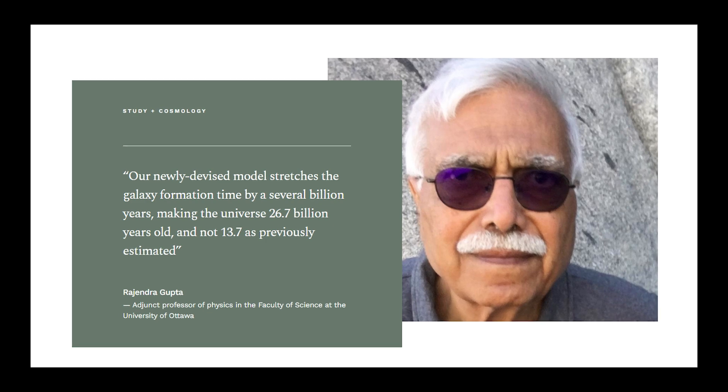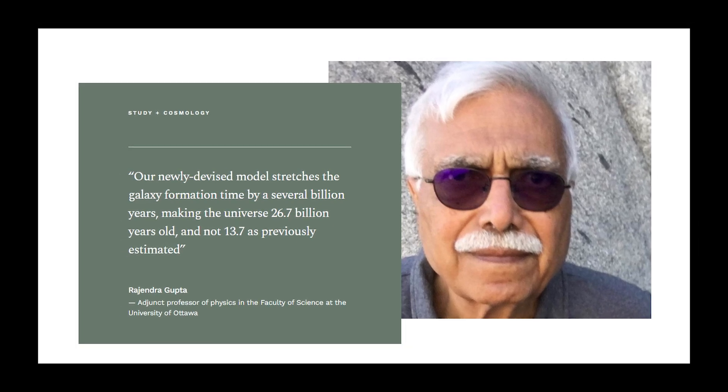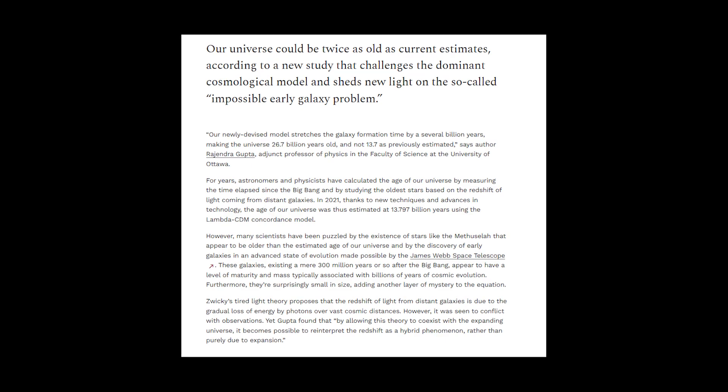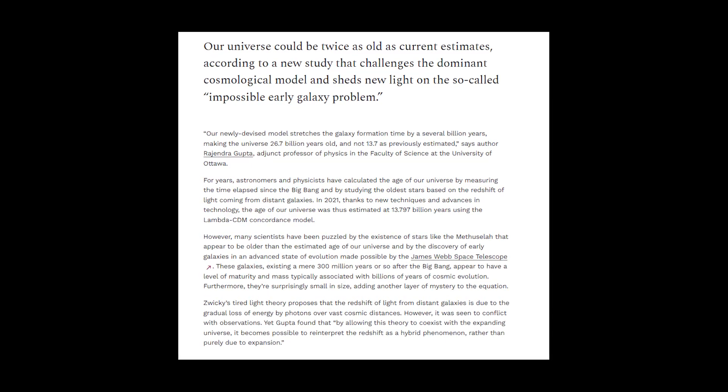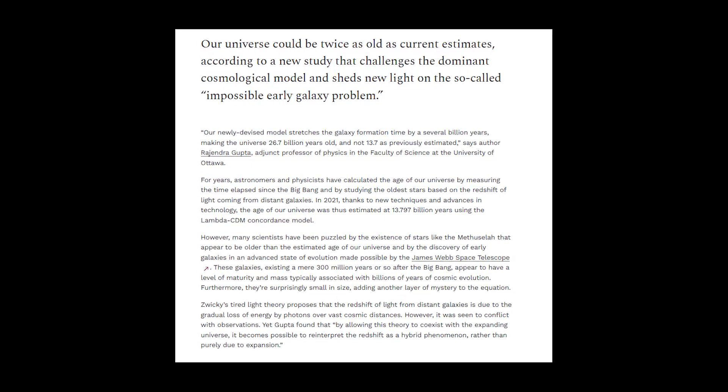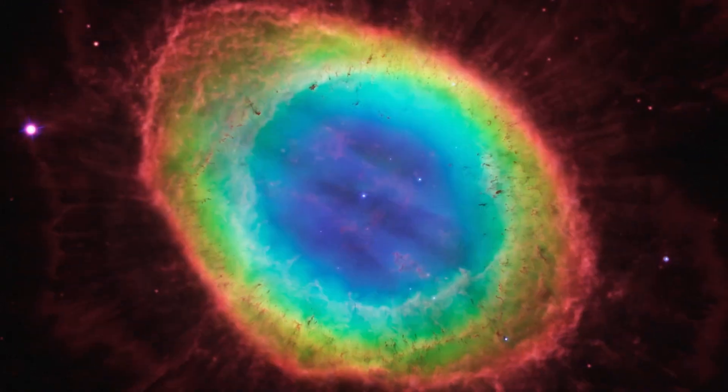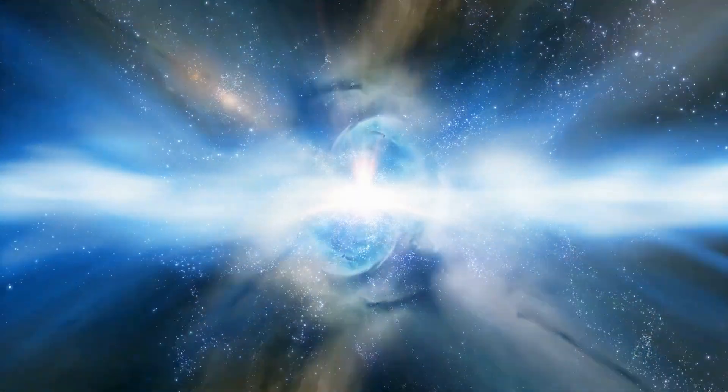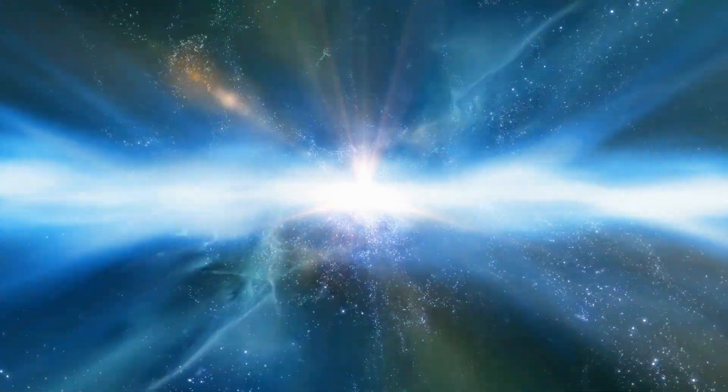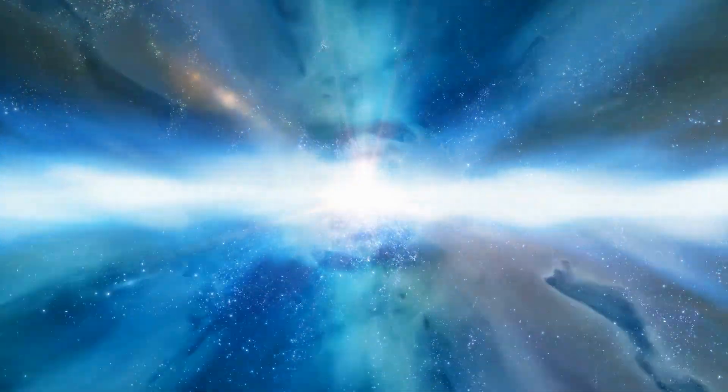In a stunning twist, Dr. Rajendra Gupta from the University of Ottawa proposed that the universe could be a staggering 26.7 billion years old, nearly twice the age we currently accept. While controversial, this claim underscores the uncertainty surrounding our cosmic timeline.